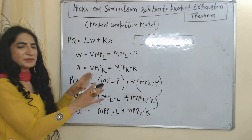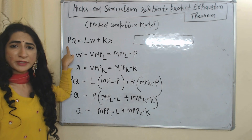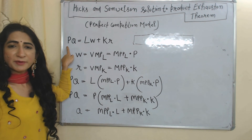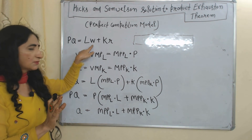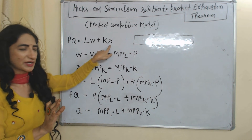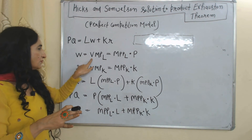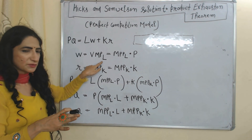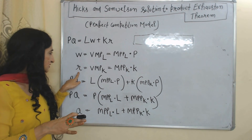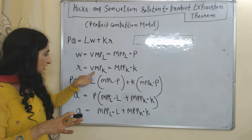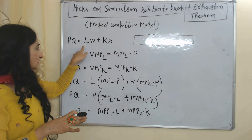Now we see the mathematical solution of Hicks and Samuelson. Here P is price, or average revenue — under perfect competition, price is equal to average revenue. Q is output, L is labor, W is wages, K is capital, R is interest rate. As discussed earlier under marginal productivity theory, W is equal to the value of marginal product of labor, which equals marginal physical product of labor multiplied by price. Similarly, R is equal to the value of marginal product of capital, which equals marginal physical product of capital multiplied by price.